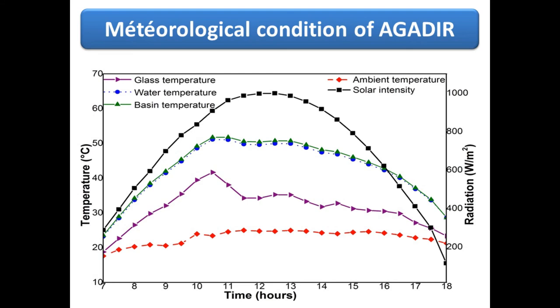The rise in temperature of the glass is due to the absorption of solar radiation, but it is lower than that of the basin and the water because it is subject to the wind's action.